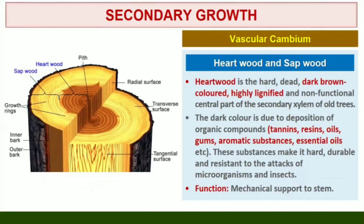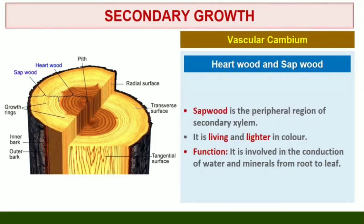Heartwood and Sapwood. In old trees, the greater part of secondary xylem is dark brown due to deposition of organic compounds like tannins, resins, oils, gums, aromatic substances, and essential oils in the central or innermost layers of the stem. These substances make it hard, durable, and resistant to attacks of microorganisms and insects. This region comprises dead elements with highly lignified walls and is called Heartwood. The Heartwood does not conduct water but gives mechanical support to the stem. The peripheral region of the secondary xylem is lighter in color and is known as Sapwood. It is involved in the conduction of water and minerals from root to leaf.